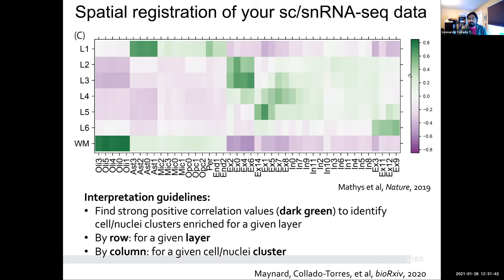Now that you have all these statistics, if we concentrate on the genes that have strong T-statistics in our layer-level data, we can then correlate the T-statistics from our spatial data versus those from the single nucleus RNA-seq data. This heatmap shows the correlation, going from minus one to one, with high values shown in darker green. White matter, compared to layers one through six, has a very different cellular composition — it's mostly composed of oligodendrocytes.